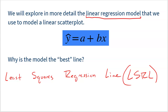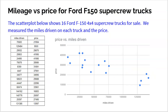Why is this the best line, and why do we call it a least squares regression line? Let's look at an example from past videos. Here we have a scatter plot showing 16 Ford F-150 trucks — the miles on those trucks and the price. We see a strong, linear, negative relationship, which makes sense: the more miles on a used truck, the lower the price.